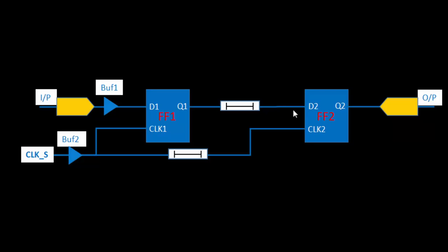Here I have captured only two flip-flops out of the several from the previous part. I have also removed the combinational logic between these two flip-flops and just represented that with the help of interconnect links. This removal is only for simplicity purposes.